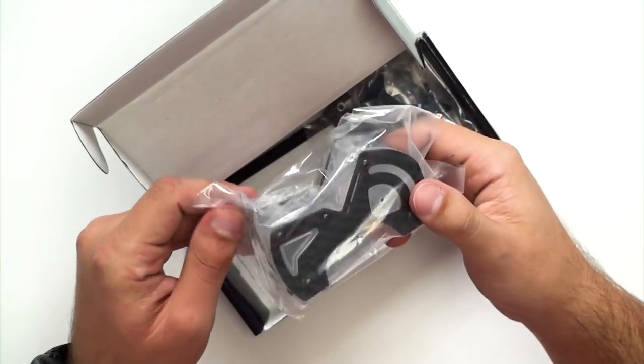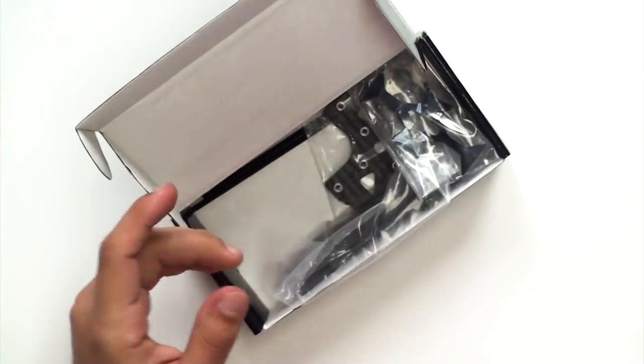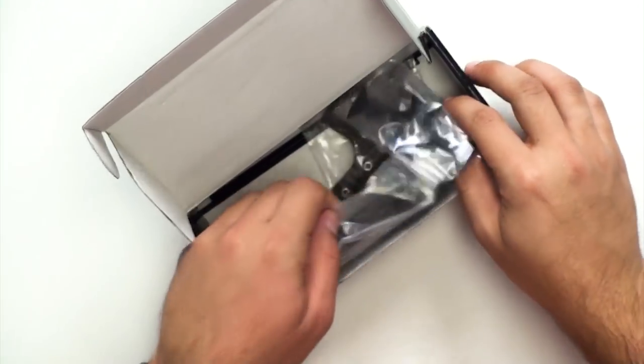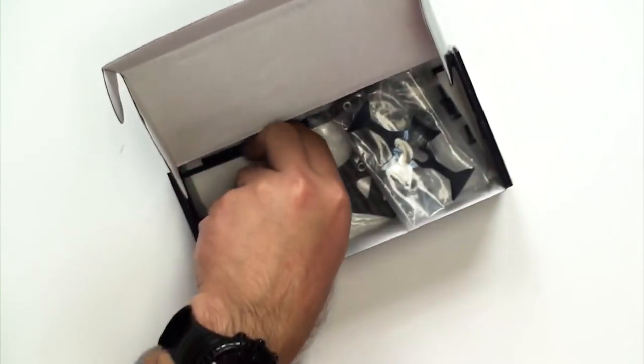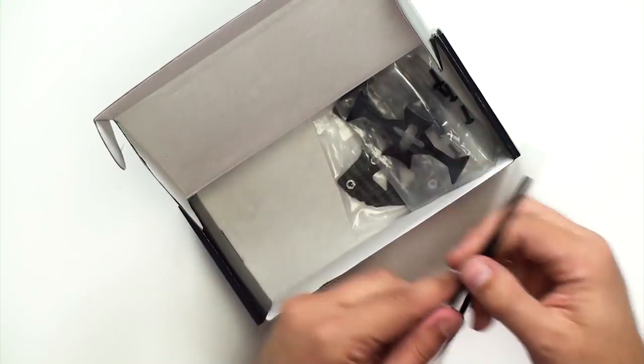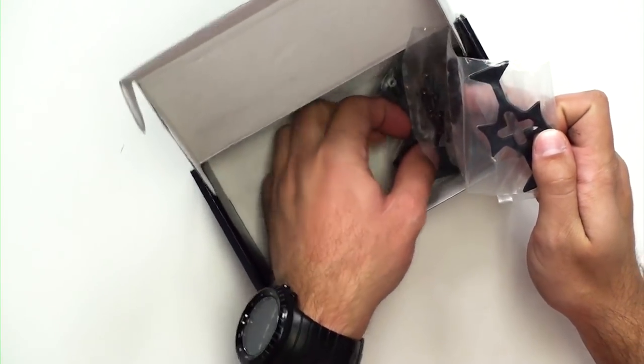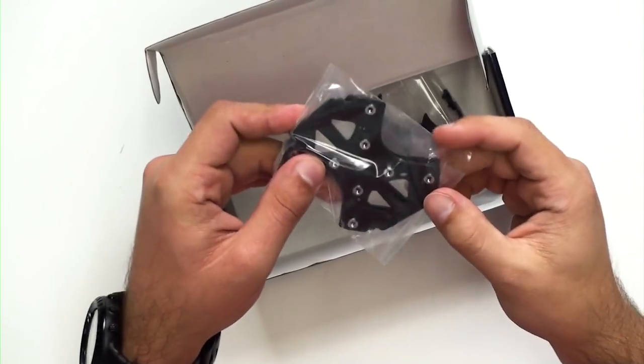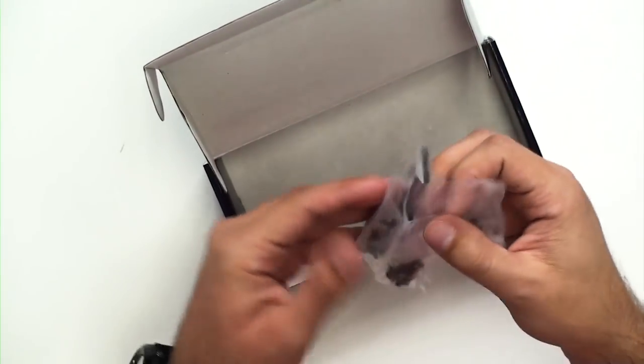The upper part of the frame that holds the camera is going to come pre-assembled like this for you. You've got the X-Style arms, some antenna tubing, the upper and lower plates, and all the hardware for the kit.